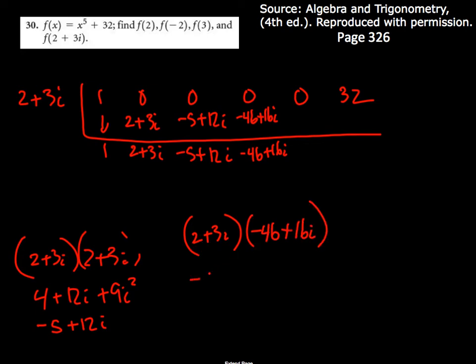Two times that, negative 92, so it'll be plus 32i. And then 3 times 46, what's that, 138-ish, minus 138i. And then this would be plus 48i squared. Okay.